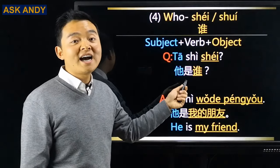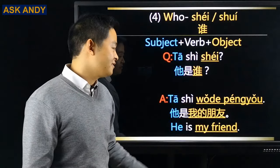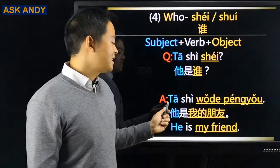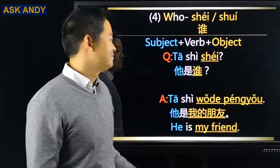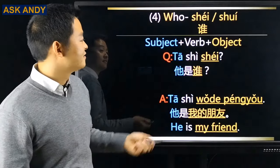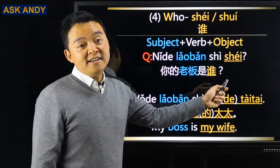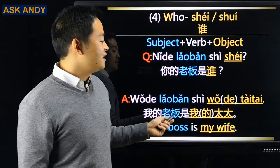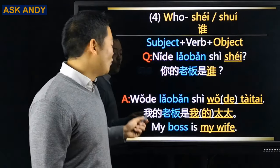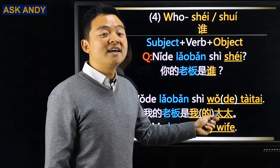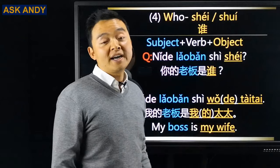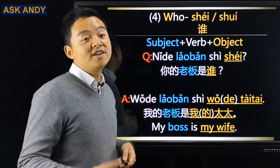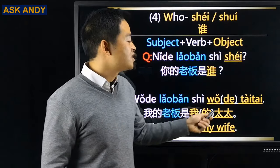她是谁? → 她是我的朋友 (She is my friend). 你的老板是谁? → 我的老板是我的太太 (My boss is my wife). The 的 is in brackets because between close family members it is often omitted in speech.